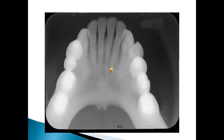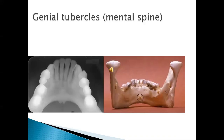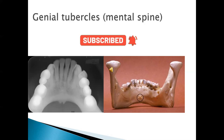In this mandibular occlusal radiograph you are seeing two spike-like radiopaque masses on the lingual side. These radiopaque masses are in fact the genial tubercles, which are usually four in number. The attachment of important muscles such as geniohyoid and genioglossus arise from this area, which is why on an occlusal radiograph in the anterior region you tend to see these radiopaque landmarks.